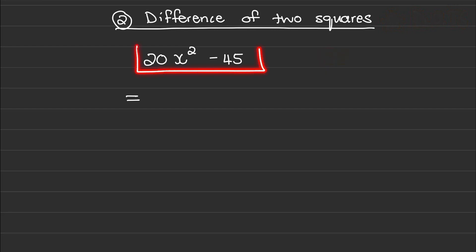In this expression, we can see that a common factor would be 5, meaning both terms are divisible by 5. If I take out a 5, I'm left with 4x² minus 9.